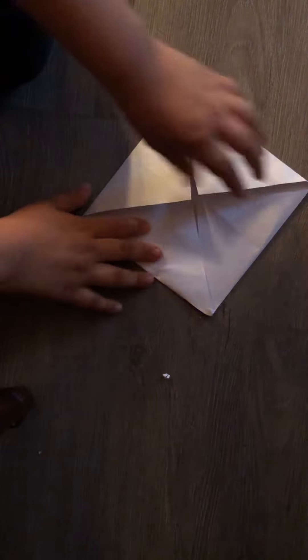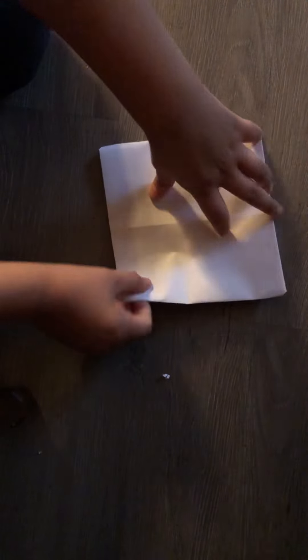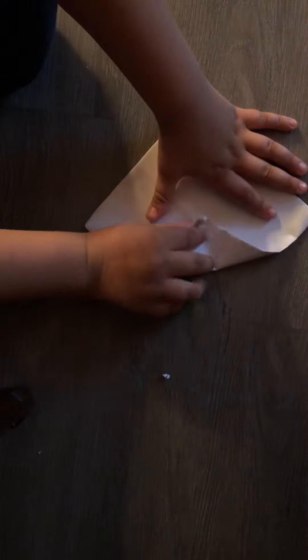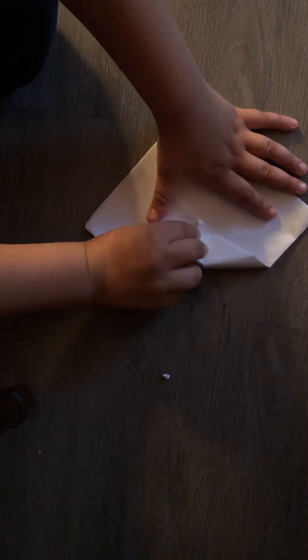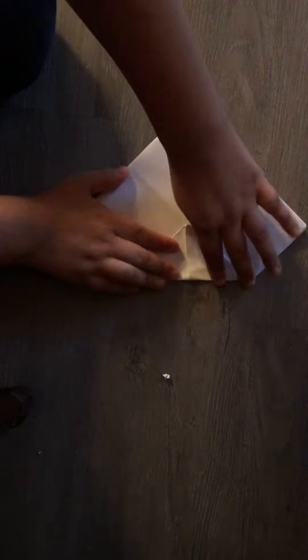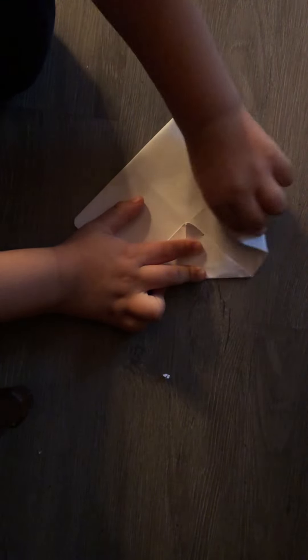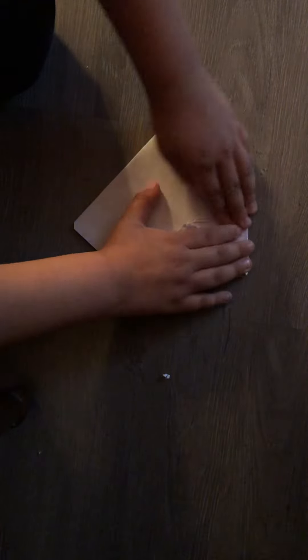Okay, you should have something that looks like this. Then we're going to flip it over and do the same thing on the opposite side to each corner. Put every corner in the middle. It might be a little bit hard. You're probably going to have to put some force on there. But trust me, this is how you make a fortune teller.